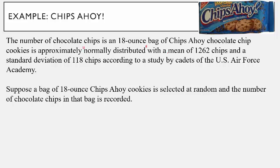They tell us that the mean — on average — there were 1,262 chips in each bag, and the standard deviation for the number of chips in each bag was 118. It makes sense that there's not the same amount of chips in every bag, since there's a manufacturing process involved, so it's not always going to be uniform or equal.